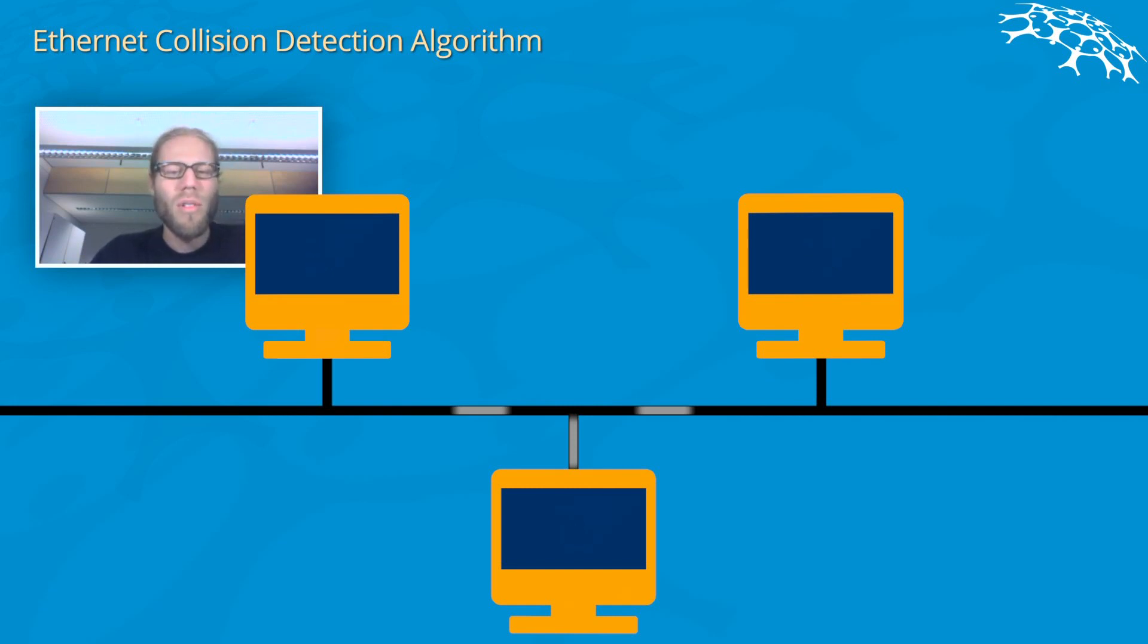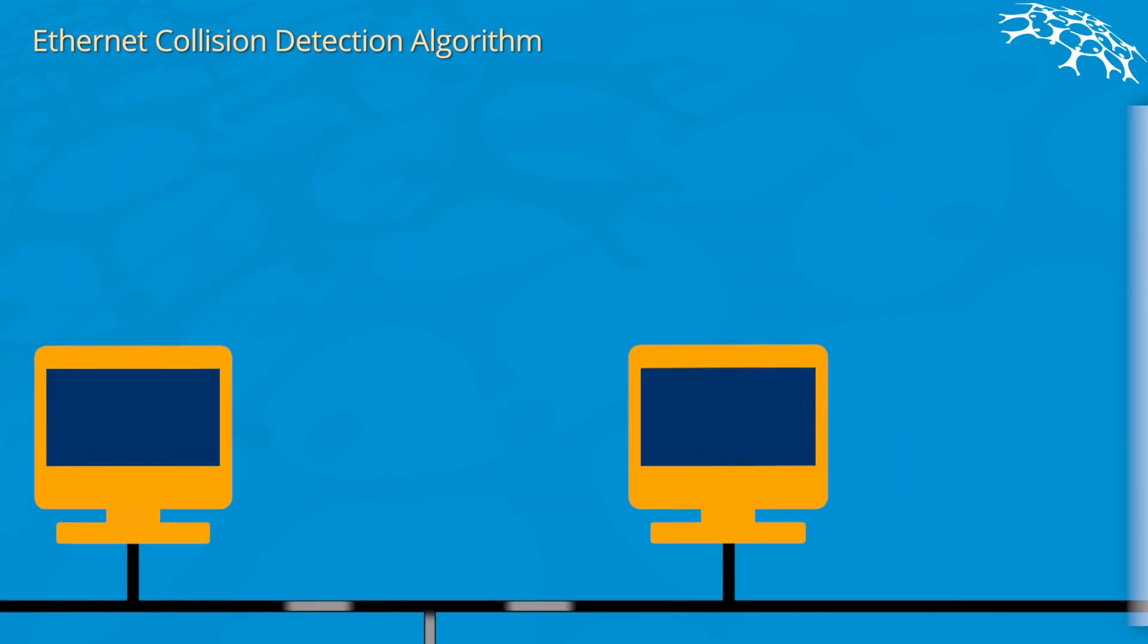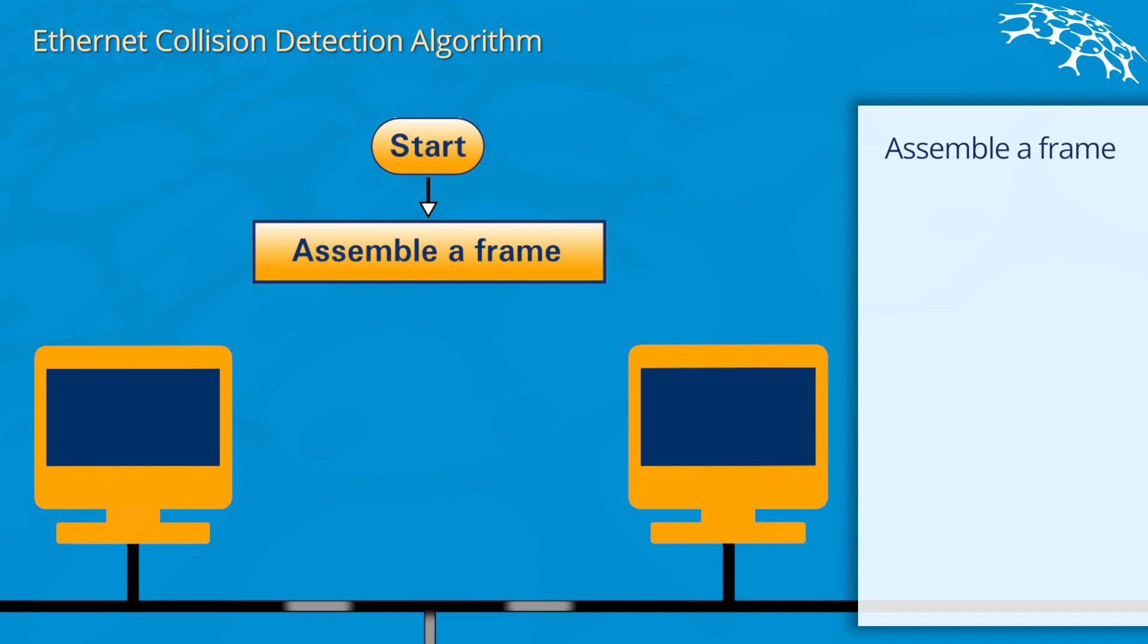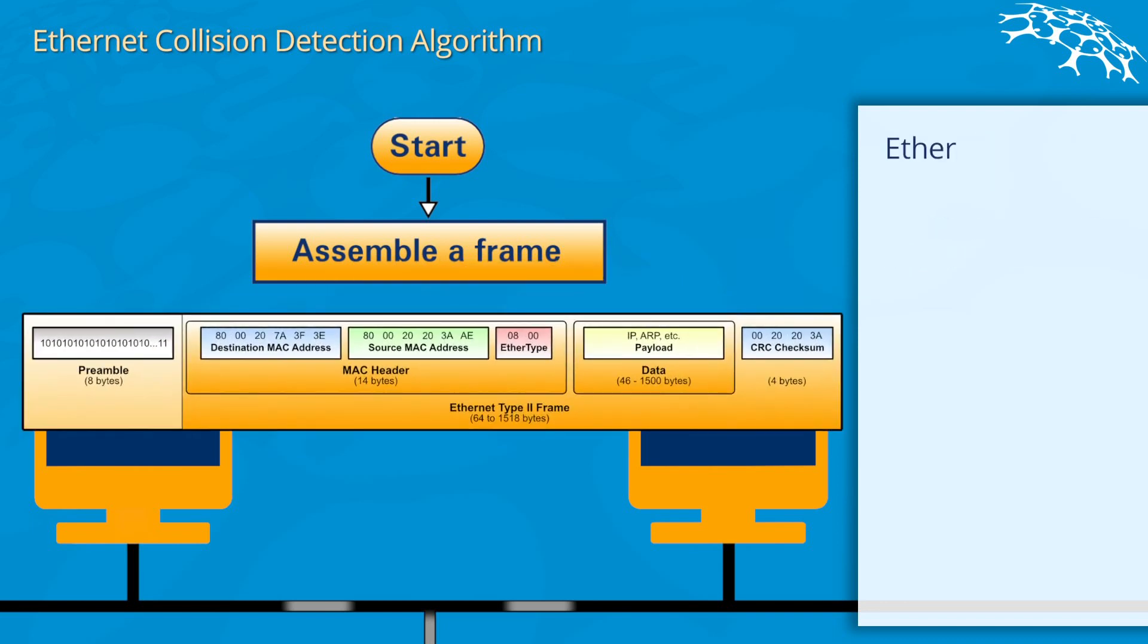Computer A in the beginning will assemble a frame. As we already know, an Ethernet frame can have up to 1518 bytes. It starts with a preamble, then the destination and source address, followed by the Ethernet type, then the data payload, and at the end the checksum. All those together create the Ethernet frame.